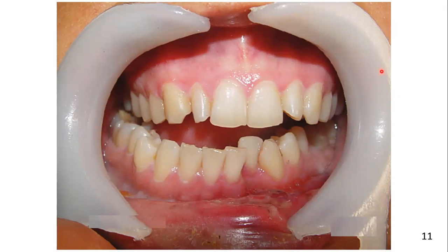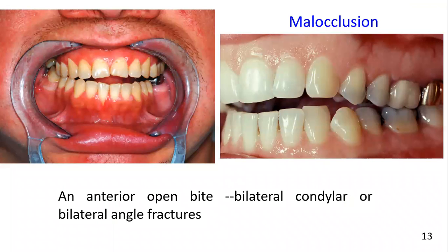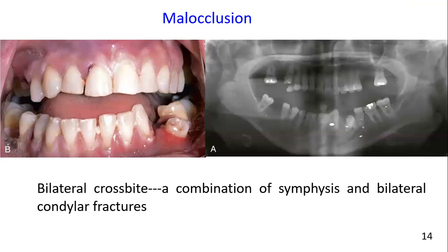The occlusion in this case shows premature contact on the right side with deviation of the jaw to the affected side, commonly seen with a right mandibular condylar fracture. Bilateral condylar fractures with shortening and dislocation result in an anterior open bite with minimal deviation of the midline. An anterior open bite usually indicates either bilateral condylar or bilateral angle fractures. Bilateral crossbite may indicate a combination of symphysis and bilateral condylar fractures.